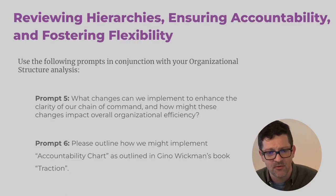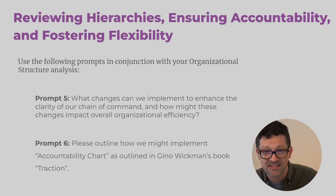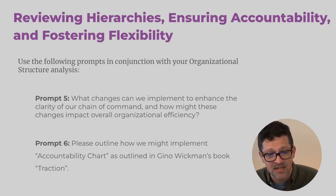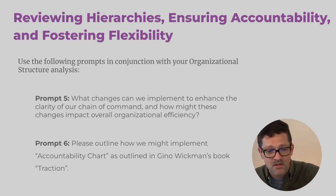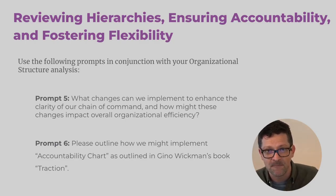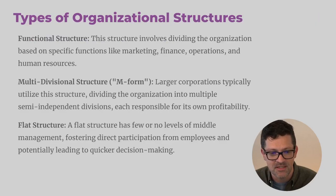Prompt five: What changes can I implement to enhance the clarity of our chain of command? How might these changes impact overall organizational efficiency? Prompt six: Please outline how we might implement an accountability chart as outlined in Gino Wickman's book Traction. Once you have that organizational structure analysis from the intake prompt, you can just ask ChatGPT to walk you through creating this accountability chart and work with it to do that.